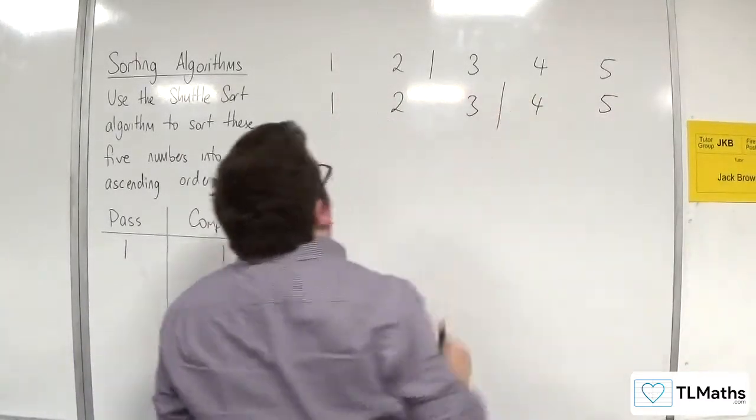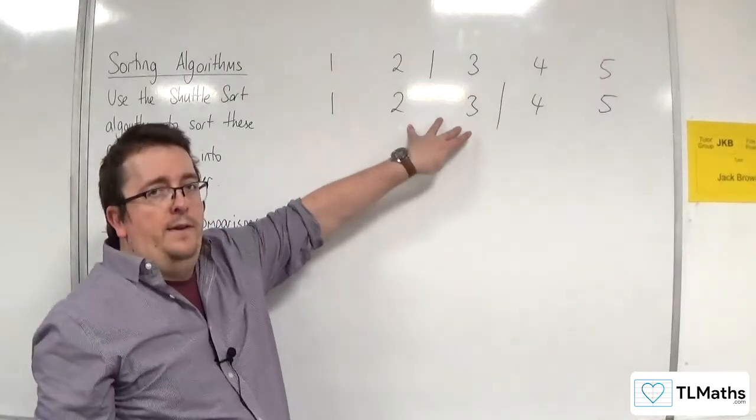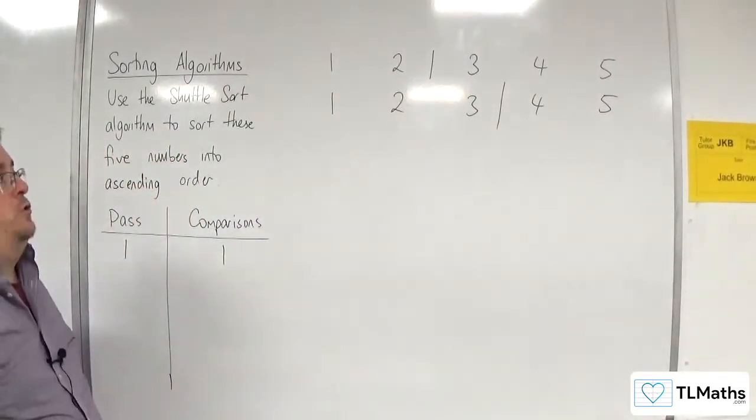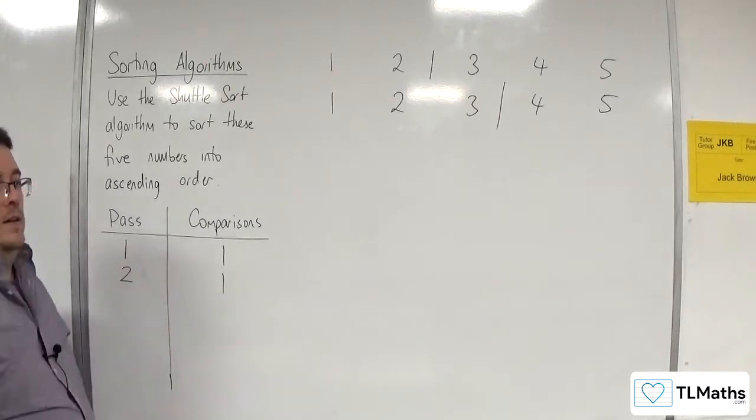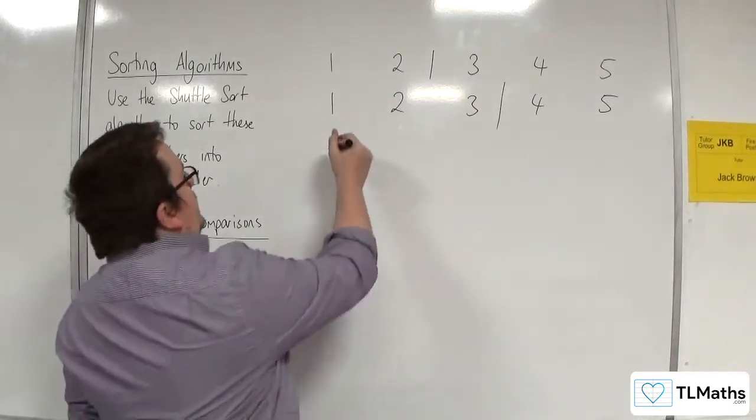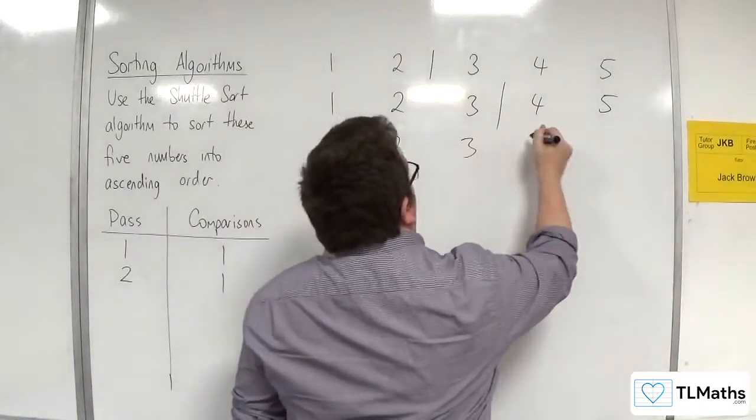We then bring in 3. 2 and 3 get compared. They're already in the correct order, so no swap is necessary. On the second pass we make 1 comparison. So we now have 1, 2, 3, 4, 5.